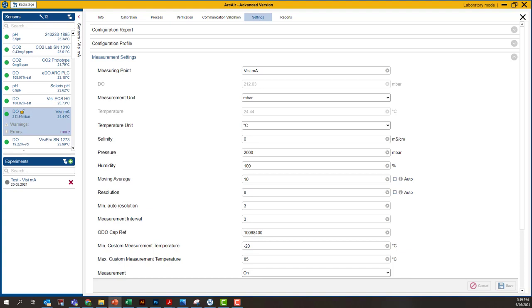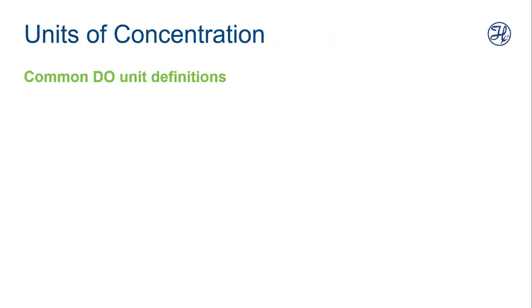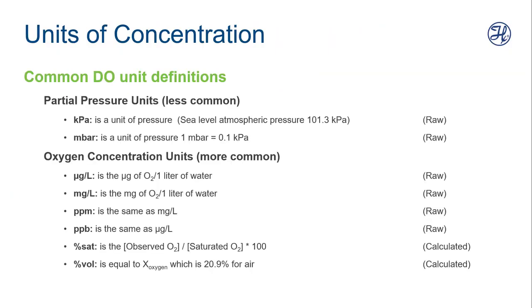So with that said, keep that in mind that we have these units of measure, and that some of these units of measure use a calculated value, and some of the units of measure use the raw partial pressure measurement off the sensor. Both are correct. But you need to be aware that the calculated value is using an atmospheric pressure value that is stored in the sensor. And if you were at a higher or lower atmospheric pressure, you need to adjust that for where you're at.